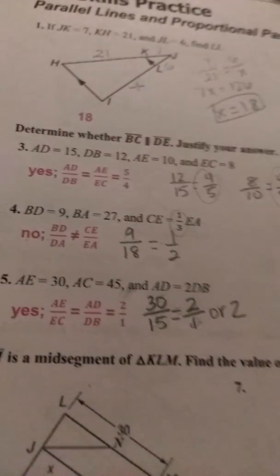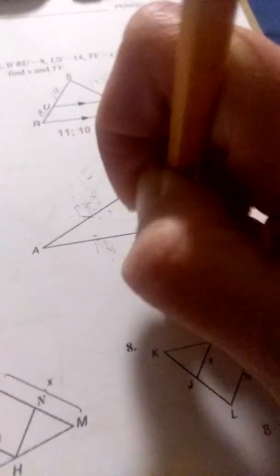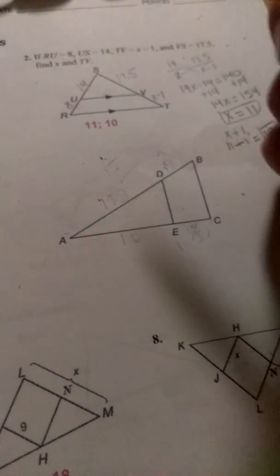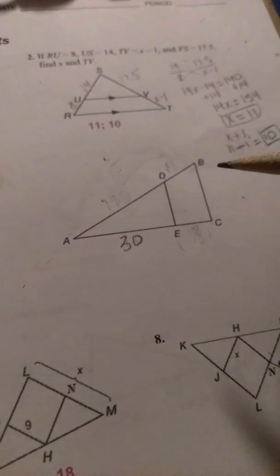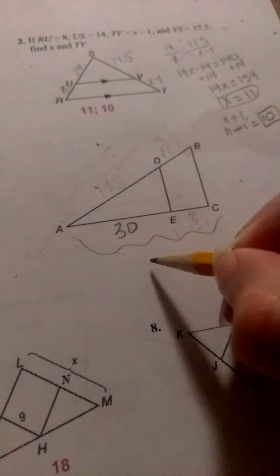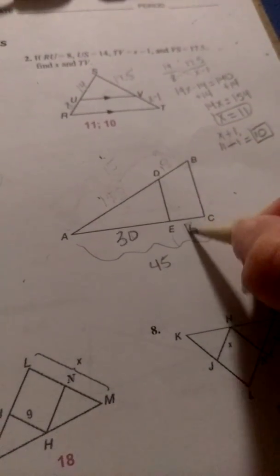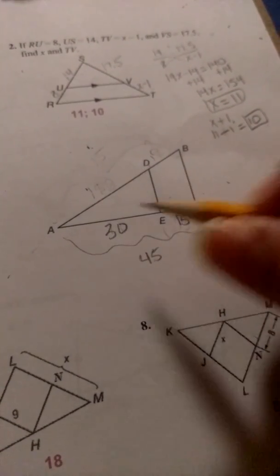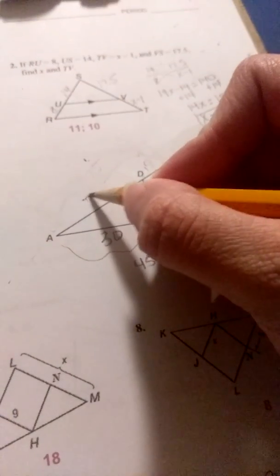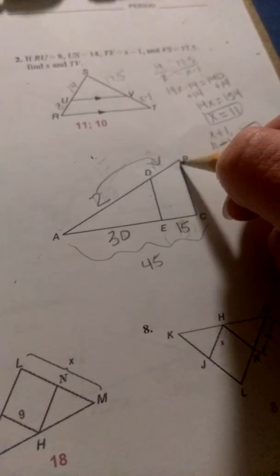Number 5, we want to do the same thing, and again, I'm going to erase this so that I can label. We are given that AE is 30, and then AC is 45. It's 45, so if I take the difference, 45 to 30, that gives me 15. And then it tells us that from AD is going to be 2 times the length of DB.